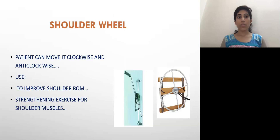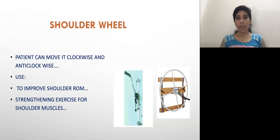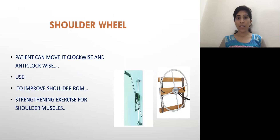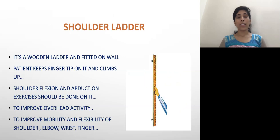Shoulder wheel. The patient can move it in a clockwise and anticlockwise direction. It is available with a full rim or without a rim. The patient keeps his or her hand on the hand gripper and rotates it in the clockwise and anticlockwise direction, which helps to improve the shoulder range of motion. There is also an adjustable resistance band available so that strengthening of the shoulder joint muscles is possible.